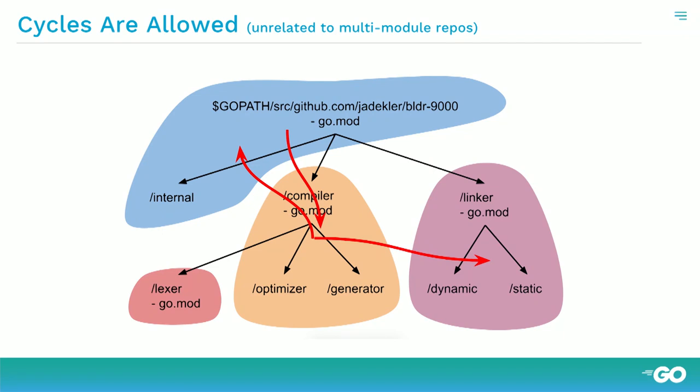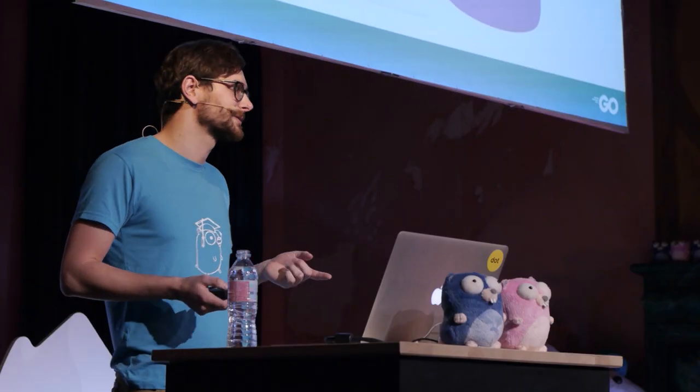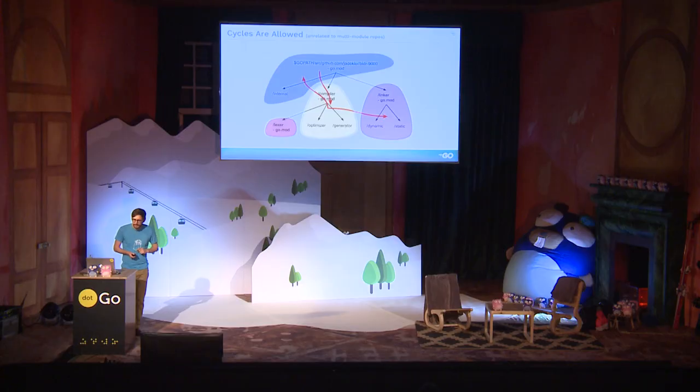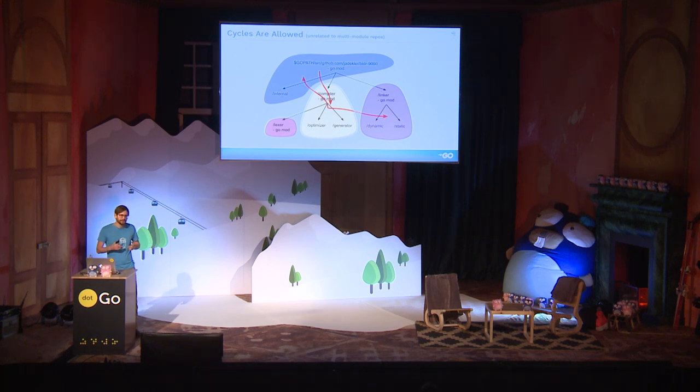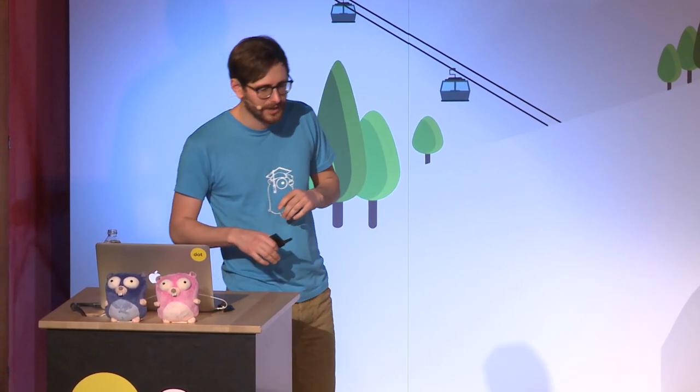One more point unrelated to multi-module repos given that last rule: you can have cycles in modules, even though you can't have cycles in packages since the Go compiler doesn't allow that. But module cycles are permitted. So that covers what multi-module repositories are. Now we're going to get into the meat of this: what it takes to add a module to a multi-module repository. At Google we found that although the core pieces are simple and the intuition is obvious, it can be pretty tricky to maintain, and getting it wrong can shoot users in the foot.